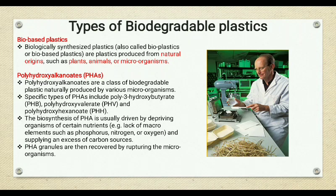Another type is polyhydroxyalkanoates, generally called PHA. These are biodegradable plastics naturally produced by various microorganisms. They are obtained from microorganisms by rupturing the microorganism cells to recover the PHA.